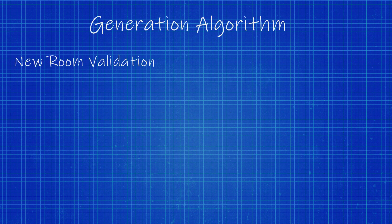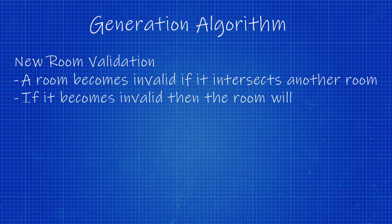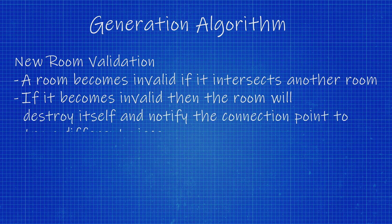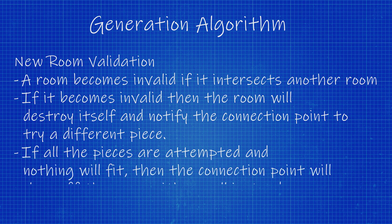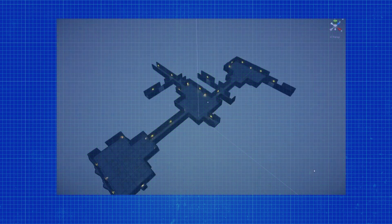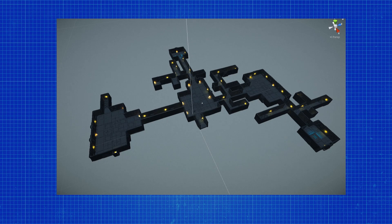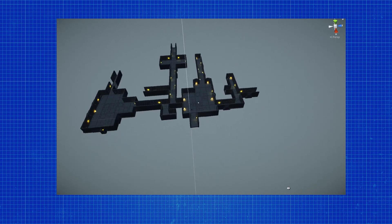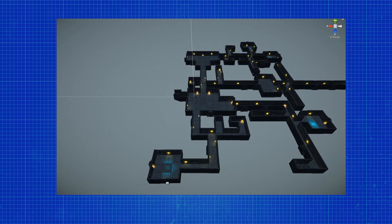How does validation work? When a new room is created it starts in a valid state, but a couple of things can make it invalid. I'm doing collision detection — a room becomes invalid if it intersects another room. If a room becomes invalid, it destroys itself and notifies the connection point that the prefab doesn't work and to try a different one. The connection point then tries its next prefab. If all available prefabs are attempted and nothing fits, the connection point simply puts a wall there instead of a room.